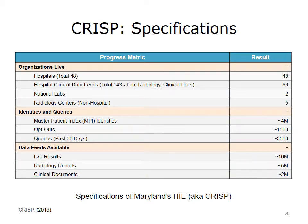CRISP has a wide network of stakeholders and exchanges data between many entities. CRISP exchanges data between 48 hospitals and connects more than 143 clinical centers, five radiology centers, and two large labs with a national scope. More than 4 million unique patients have been added to CRISP, thus creating more than 4 million master patient indexes. Around 1,500 patients have decided to opt out of CRISP's data exchange. CRISP receives thousands of queries from clinicians on a monthly basis, making it a suitable central hub to provide overall population health risk scores to clinicians. More than 16 million lab results, 5 million radiology reports, and 2 million clinical documents have been exchanged via CRISP as of 2015.